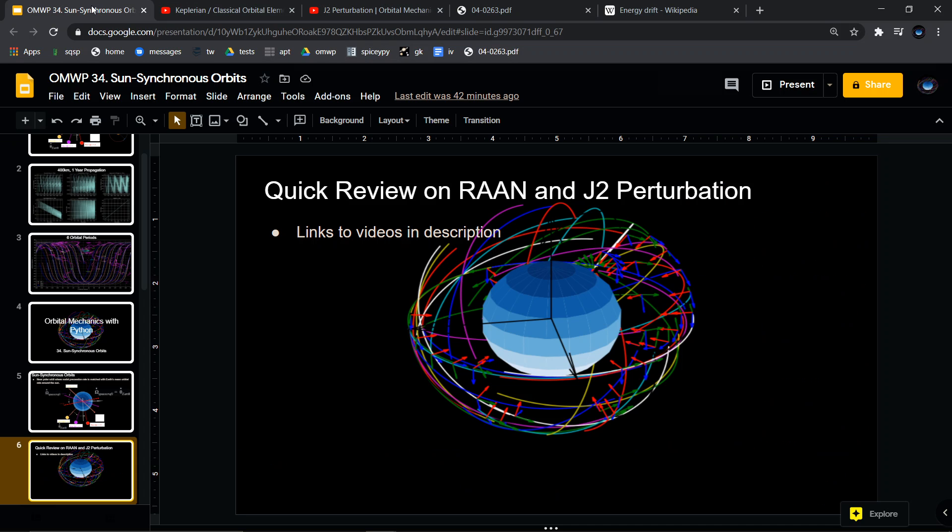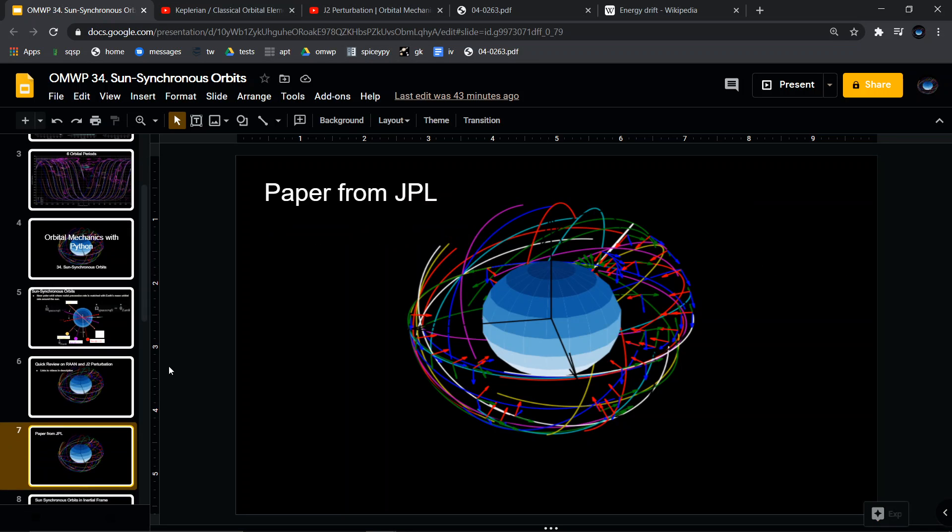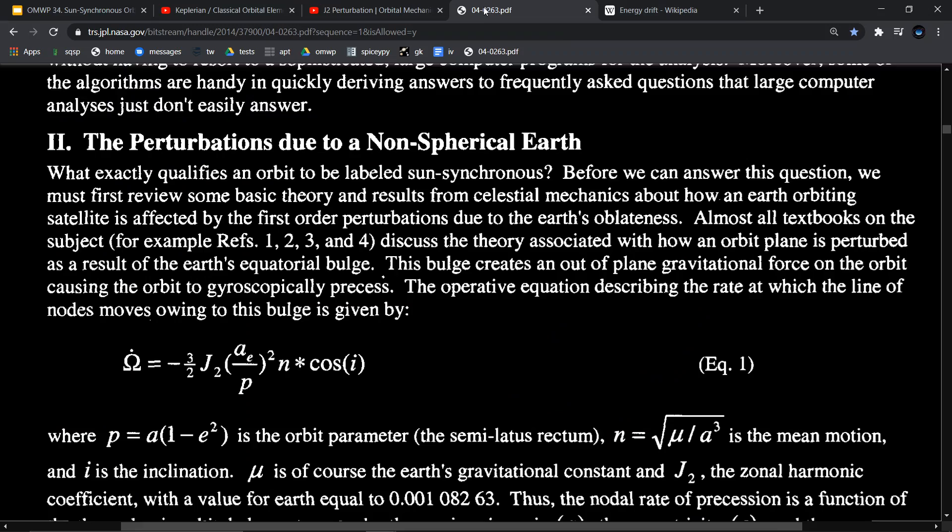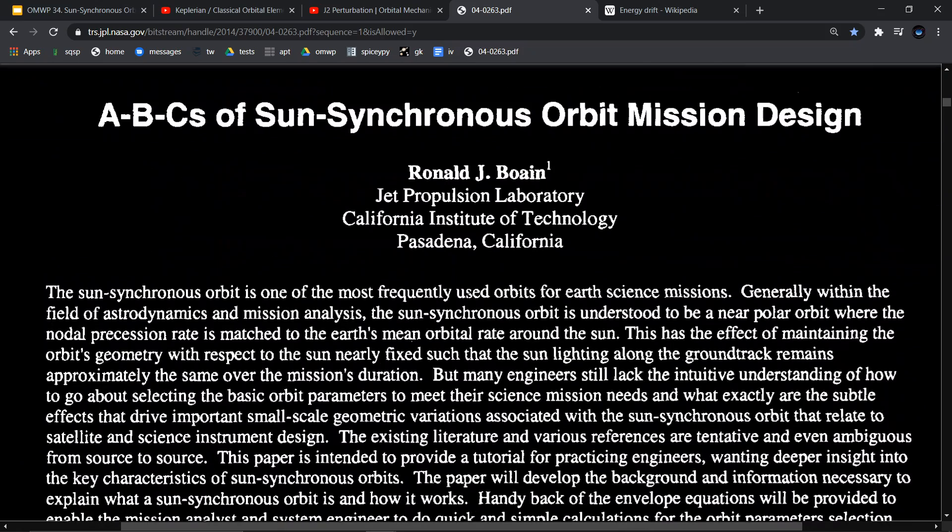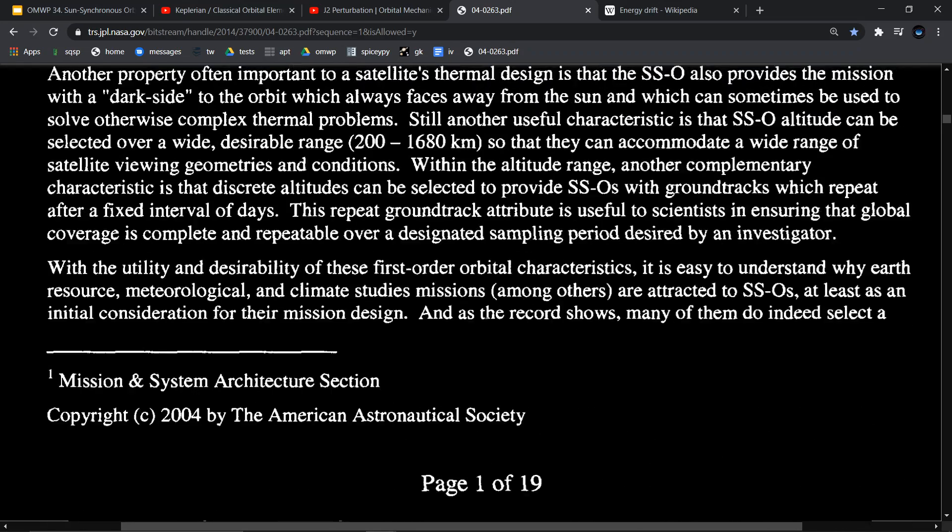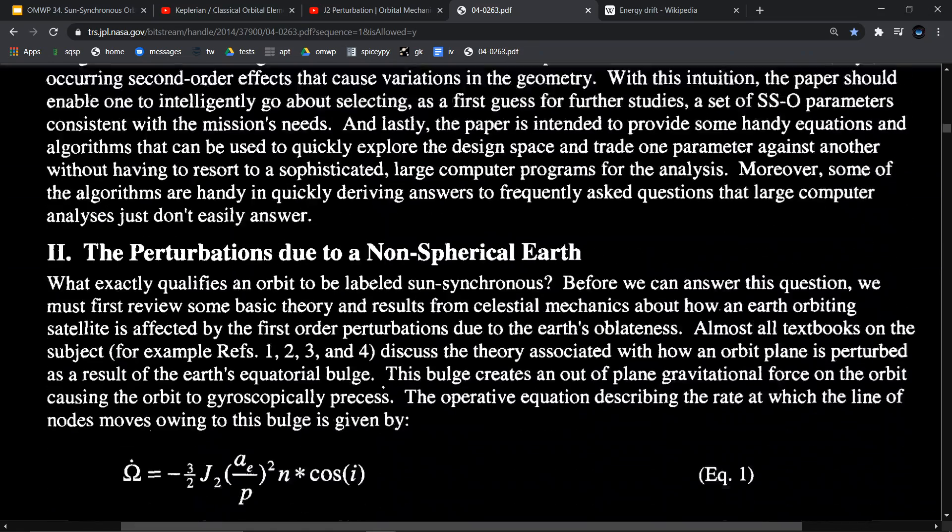I want to go over this paper from JPL because this is where I get a lot of the information for this video. This is a really great paper from Ronald at the Jet Propulsion Laboratory, giving the ABCs of sun-synchronous orbit mission design. I'll have a link in the description because this is a really good paper that goes deeper into the math and more details than I will in this video.